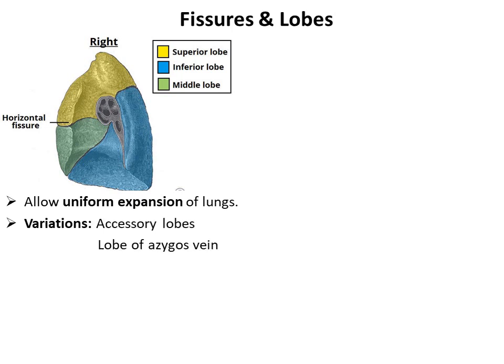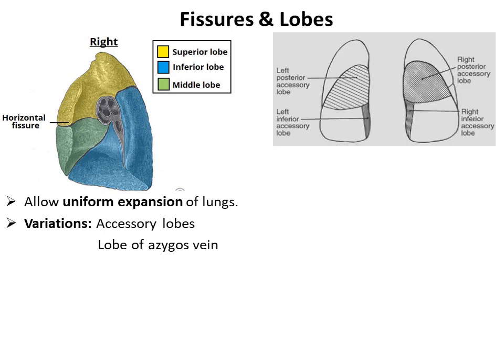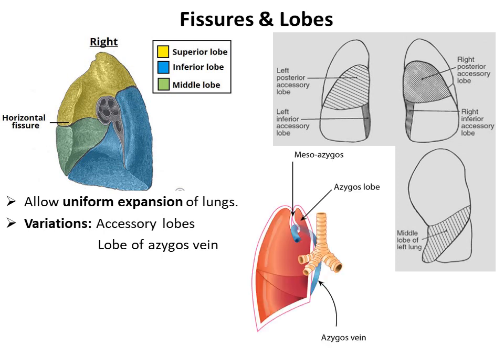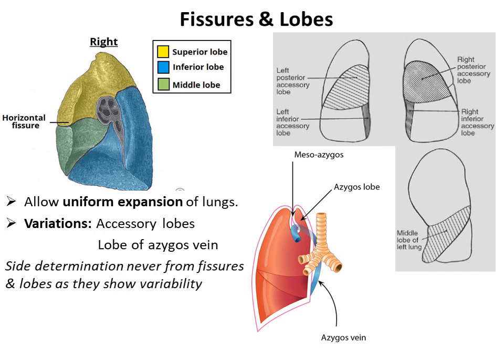There is a lot of variation in the number and presence of fissures and lobes. Both the right and left lung may show accessory lobes posteriorly as well as inferiorly. The left lung may have an additional middle lobe. Due to a congenital anomaly of the development of the azygous vein, an additional lobe may be present in the upper part of the right lung, called the lobe of the azygous vein. Due to this variability, the side determination of the lung is never done on the basis of fissures and lobes.